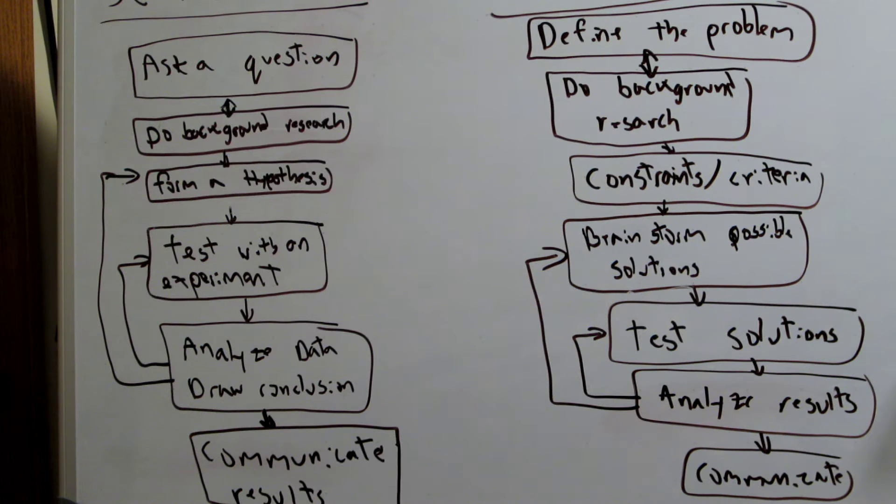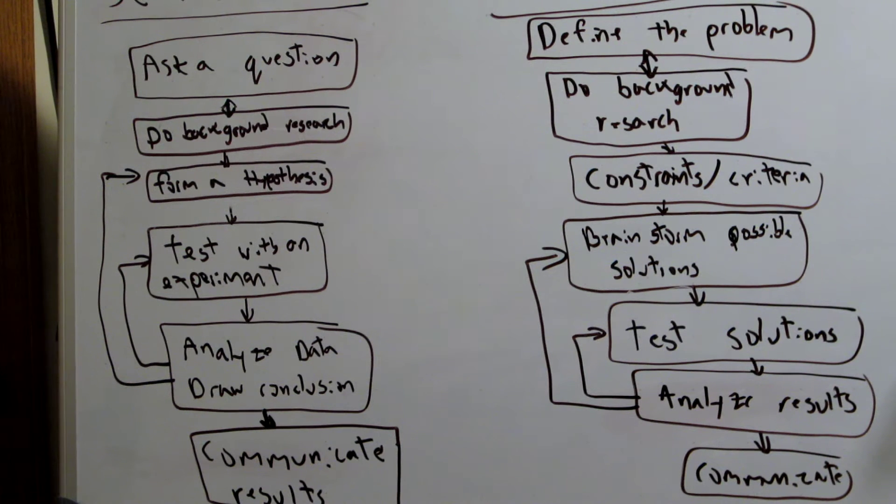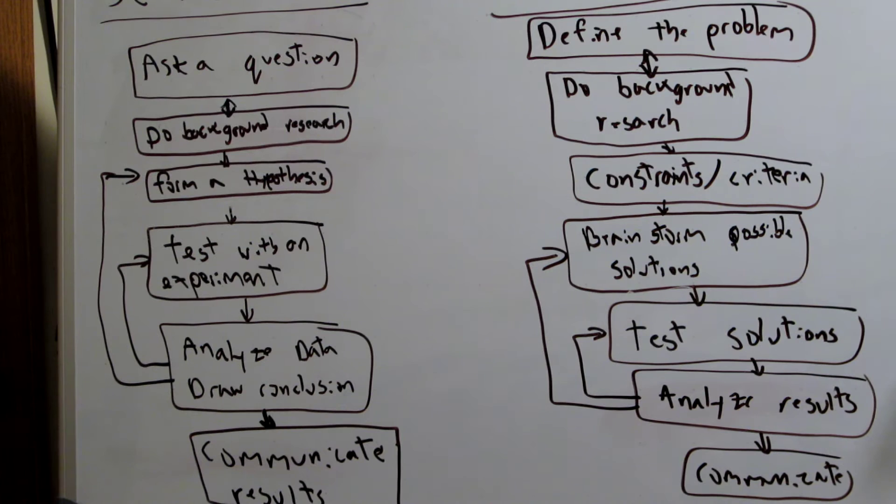Through that you're going to test it, figure out if it was true or false. In the next step to analyze data and draw a conclusion, you're going to figure out how your hypothesis played out. How did your test do? Did you have to go back and redo your test, redo your experiment, or do you have to go back and reform a hypothesis?